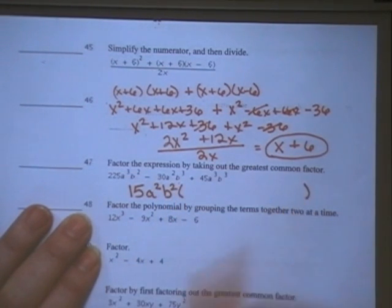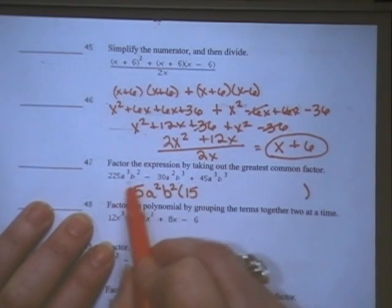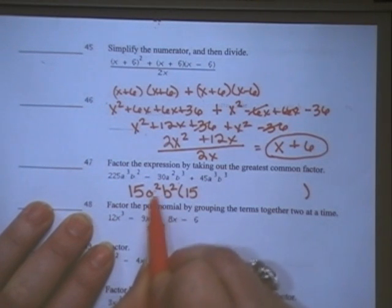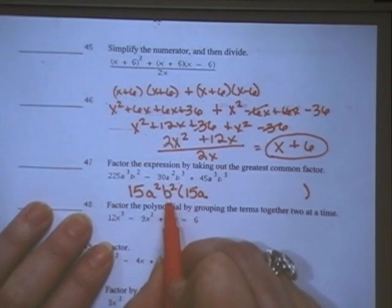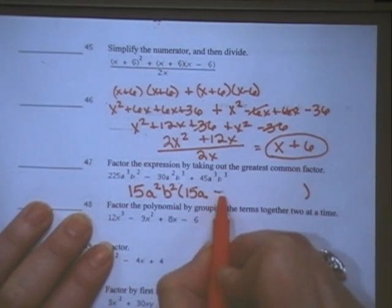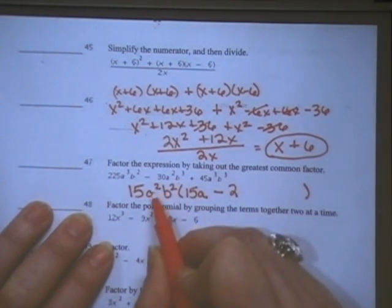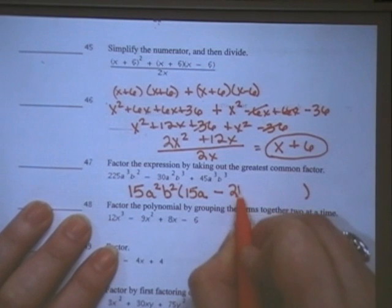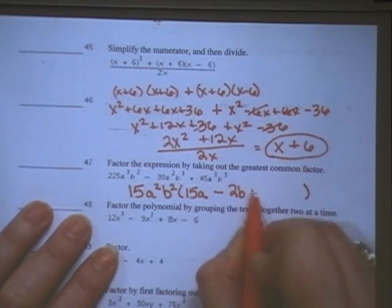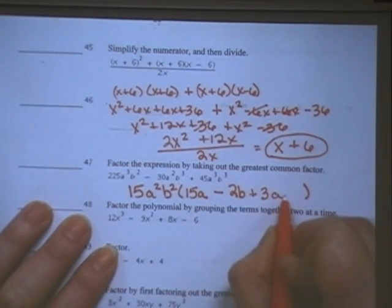Now you have to divide into what's left over. 225 divided by 15 is 15, and a cubed, taking out a squared, leaves me with an a. b squared divided by the b squared that I took out in the GCF goes away. 30 divided by 15 is 2. a squared divided by a squared is 1, I don't have to write anything. b cubed divided by b squared leaves a b. 45 divided by 15 is 3. a cubed divided by a squared leaves an a, and b cubed divided by b squared leaves a b.